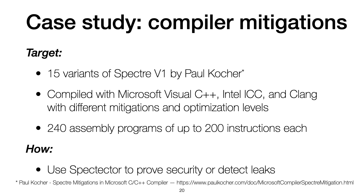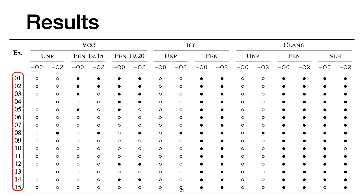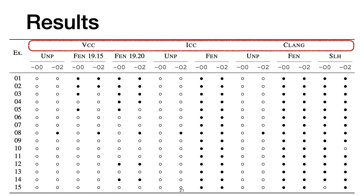As a first case study, we used Spectator to analyze how compilers place Spectre countermeasures. As a target, we analyzed 15 variants of the Spectre V1 snippet developed by Paul Kocher. We compiled these 15 programs with the Microsoft Visual C++, the Intel ICC, and the Clang compiler, using different mitigations and optimization levels. As a result, we obtained a corpus of 240 assembly programs, and we used Spectator to prove security or detect leaks in each of these programs. This table illustrates the results. On the left, we have the 15 programs. On the top, we have the three compilers.